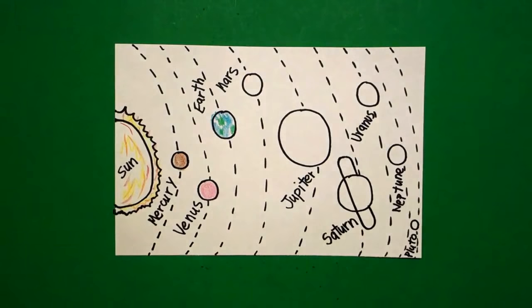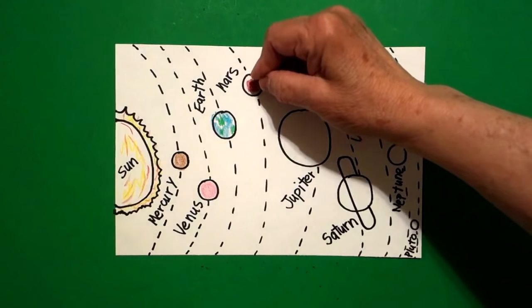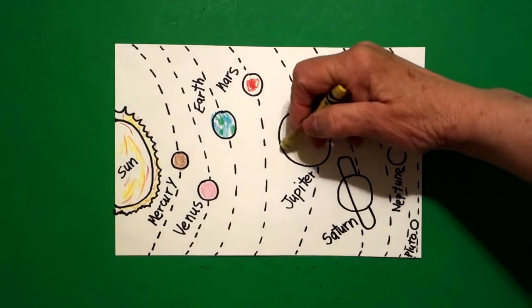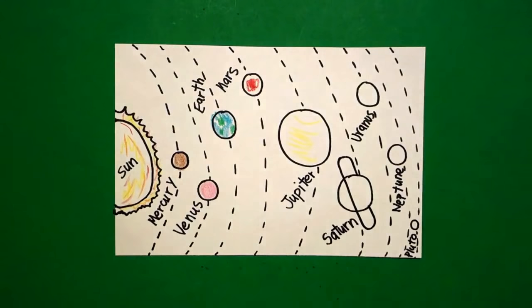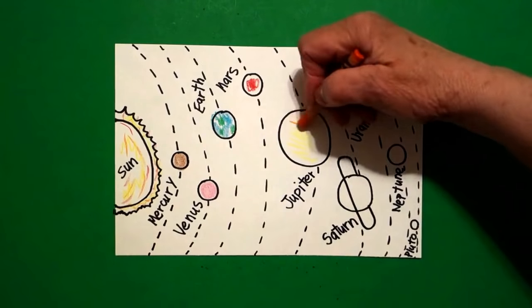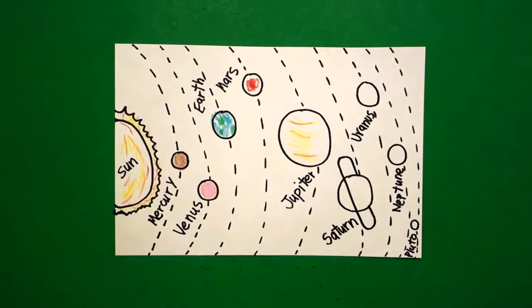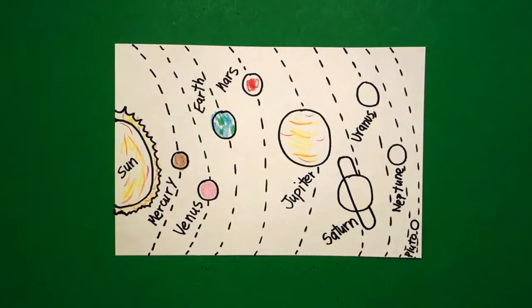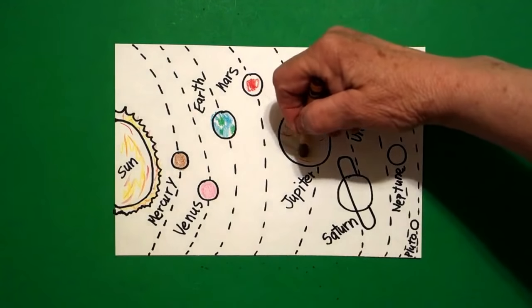Then Mars is always called the red planet so I made it red. And then my Jupiter, kind of the big guy, I put some yellow, put in some orange, just a tad, a little bit of red, again, just a little amount. And then I went over everything with my brown. Filled that all in.